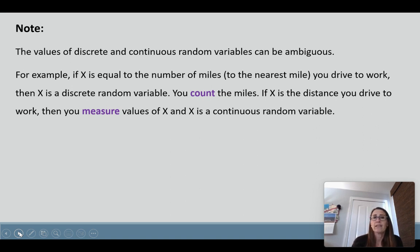For example, if X is equal to the number of miles to the nearest mile you drive to work, then it's a discrete random variable because you're counting the miles. But if you define X as the distance you drive to work, then you're measuring those values, and then that would be a continuous random variable. So it's really important when you're reading problems or designing a study that you know which one are you asking: are you asking about something you're going to count or something you're going to measure?